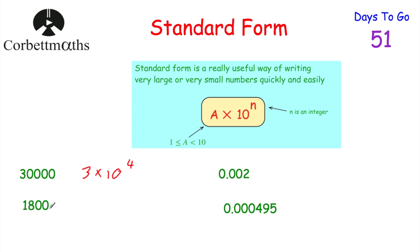Next: 1,800. We need a number between 1 and 10, so we choose 1.8 × 10 to the power of — starting from 1.8 we'd need to move the digits 1, 2, 3 columns to the left — so it's 1.8 × 10³.